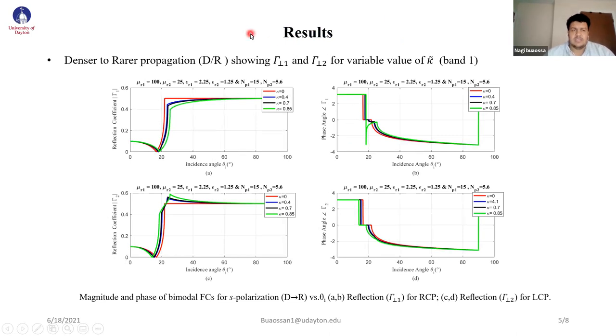The results from denser to rare propagation show several cases. With reflection coefficients one and two, we can see here there is anomalous Brewster angle.